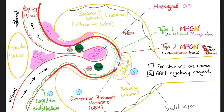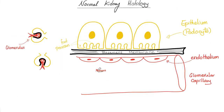Now let's talk about nephrotic-nephritic. Diffuse proliferative: sub-endothelial deposits. Membranoproliferative type 1: sub-endothelial, under the endothelium. Type 2 goes into the membrane — we call it dense deposit disease. Quick recap: minimal change disease — nothing; focal segmental — nothing; membranous — sub-epithelial; diabetic — no immunofluorescent deposits; amyloid — no immune complex deposits; diffuse proliferative — sub-endothelial; membranoproliferative type 1 — sub-endothelial; type 2 — goes into the glomerular basement membrane. Coming up: post-streptococcal glomerulonephritis — sub-epithelial deposits.